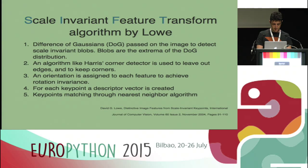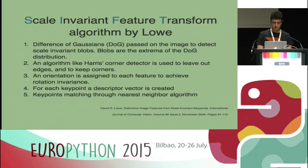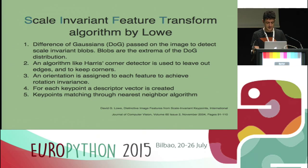Here are the main steps of the SIFT algorithm. First, a Difference of Gaussian operator is applied to the image varying the standard deviation. The result is a distribution and the extrema of the distribution are the scale-variant blobs. Difference of Gaussian detects corners and edges. An algorithm like a HARRIS corner detector is used to filter out edges. To obtain rotation invariance, an orientation is assigned to every key point. Then for each key point a descriptor vector is created. Key points are then recognized and matching is performed through a nearest neighbor algorithm between descriptors.